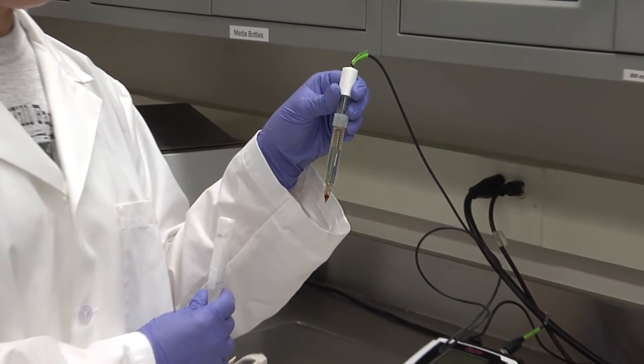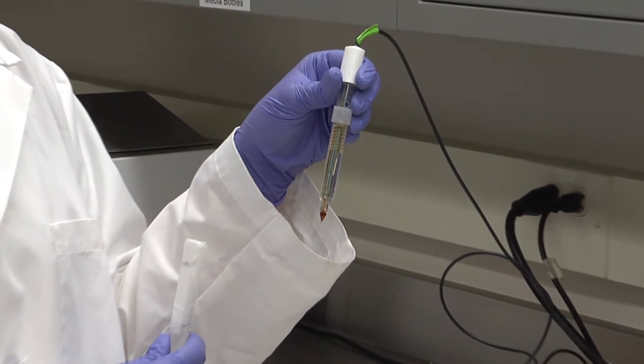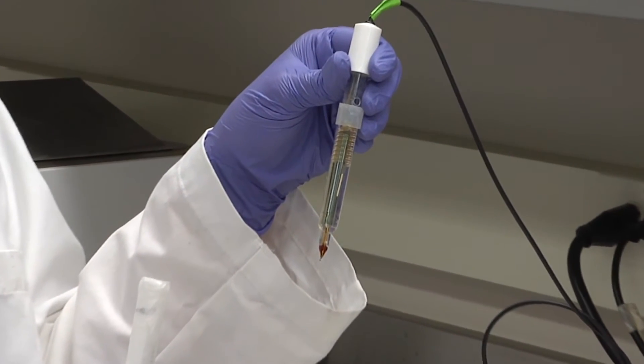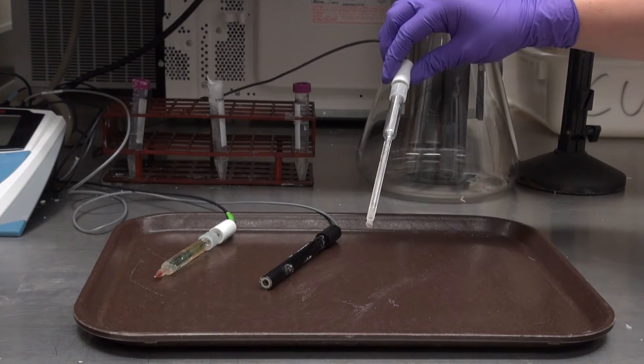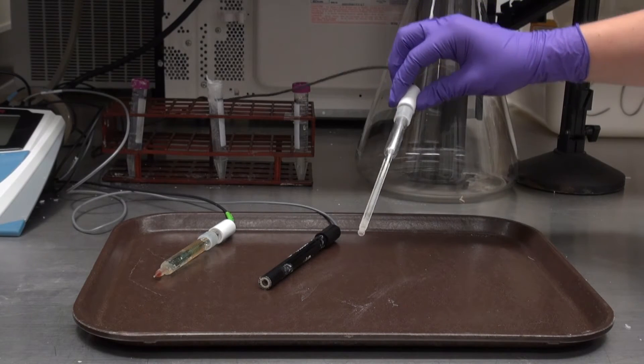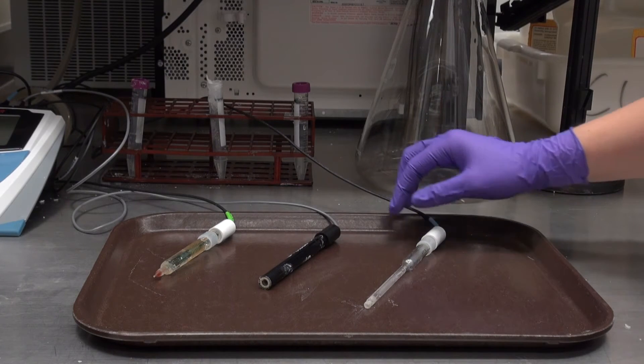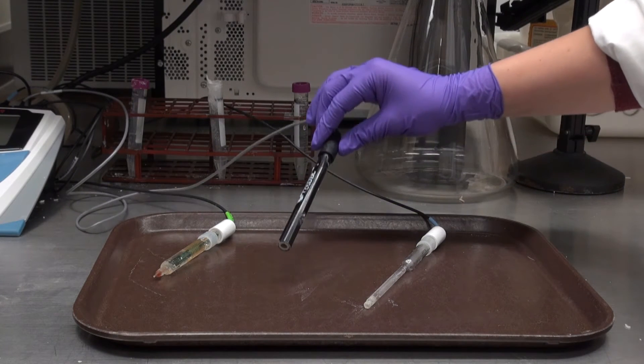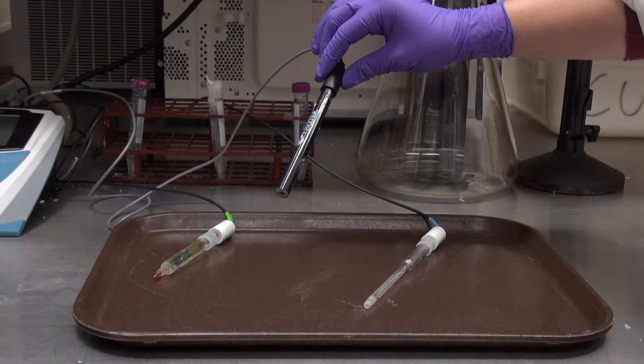The electrode is the portion of the meter that is actually inserted into the meat sample or solution being measured. Some electrodes are specific to measuring only liquids, some measure surfaces of products, and some are able to be used on a variety of sample types.